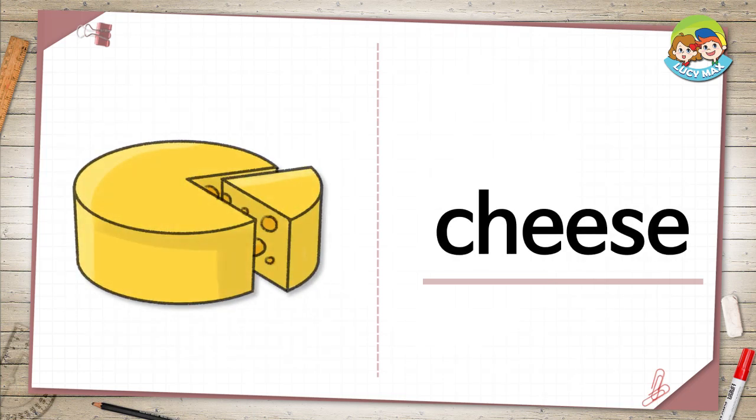The last word is cheese. This is a food that comes from milk. It is usually yellow or white. You can put it on pizza. What other thing can you put cheese on?